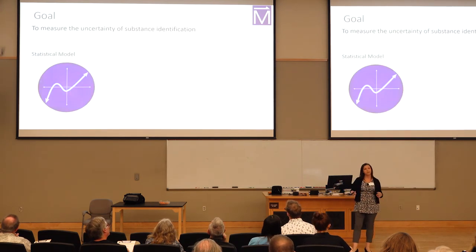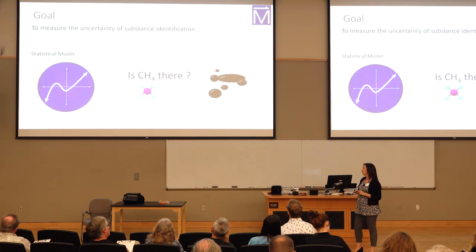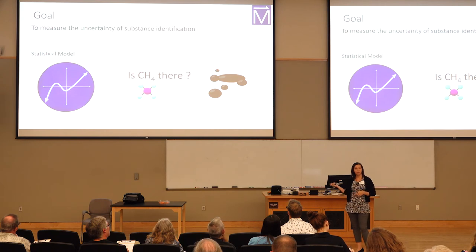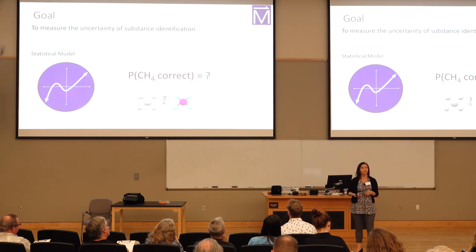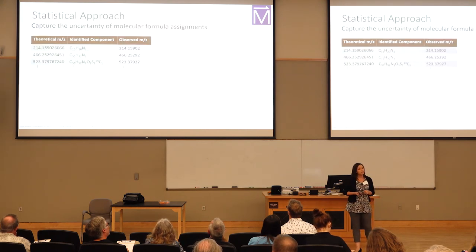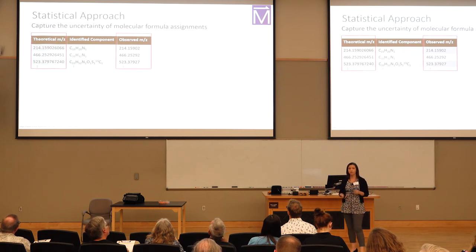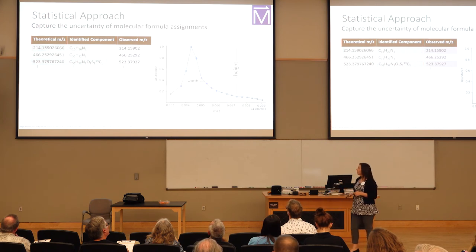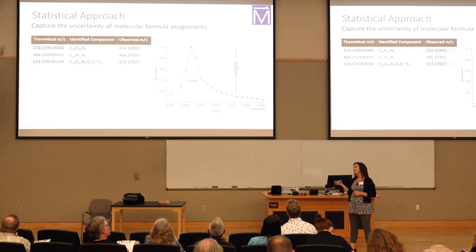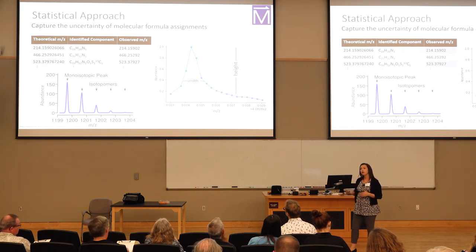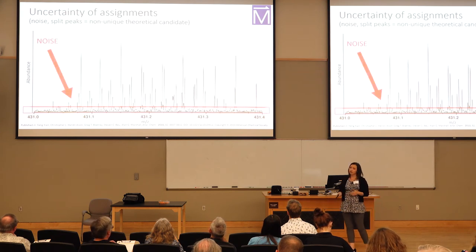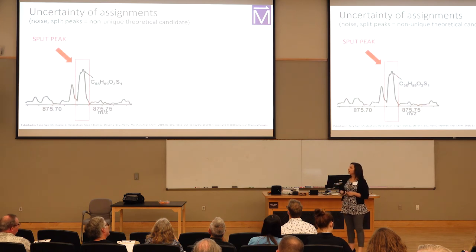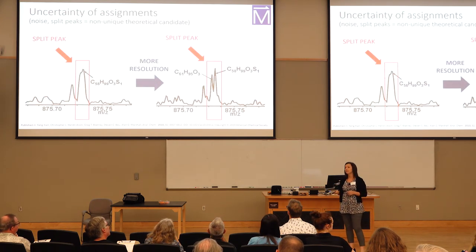Therefore, our goal is to create a statistical model to answer the question: is this identified component in this sample? Which we've translated as: what is the probability of this assigned molecular formula being correct? In our statistical approach, we consider the error between the observed M over Z and the theoretical value for each identified component, the shape of each peak in the spectrum, the relationship between components since we know their chemical patterns, the noise created in the process of collecting data, and the resolution of our spectrum, which can create split peaks.